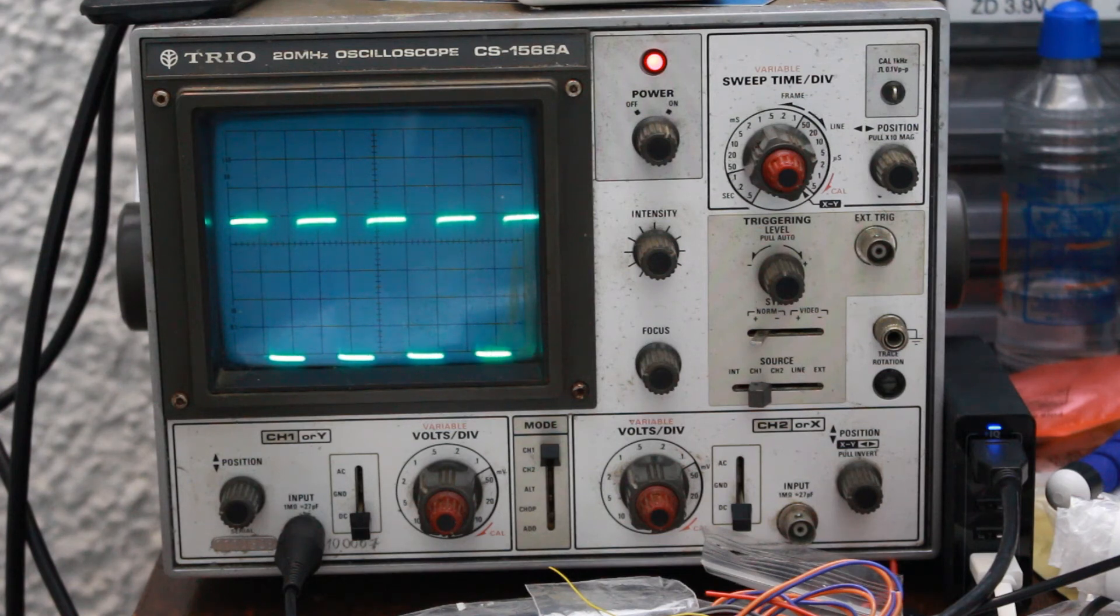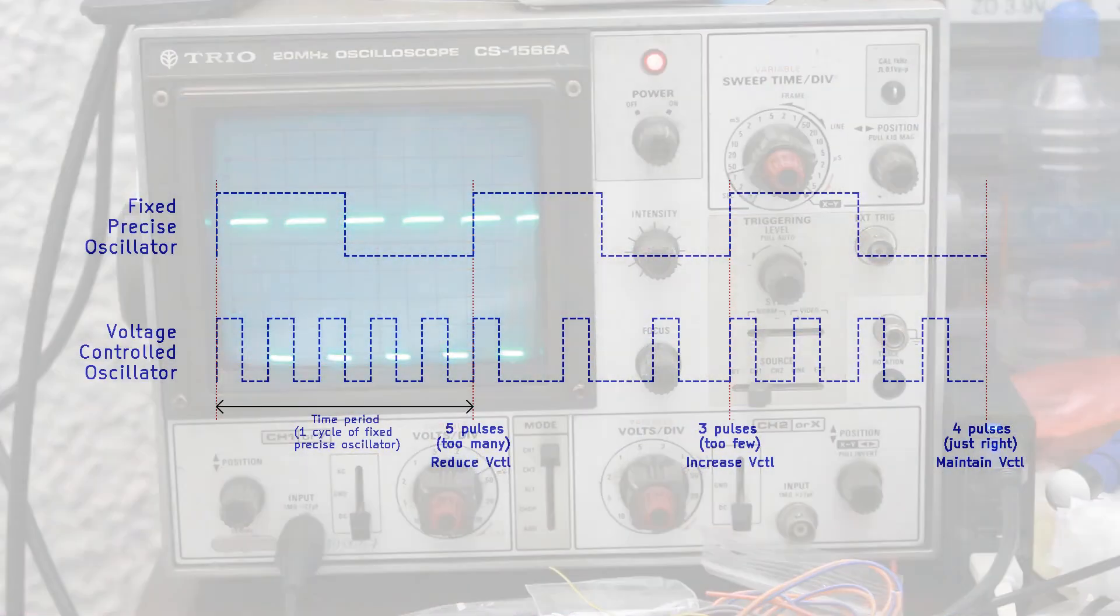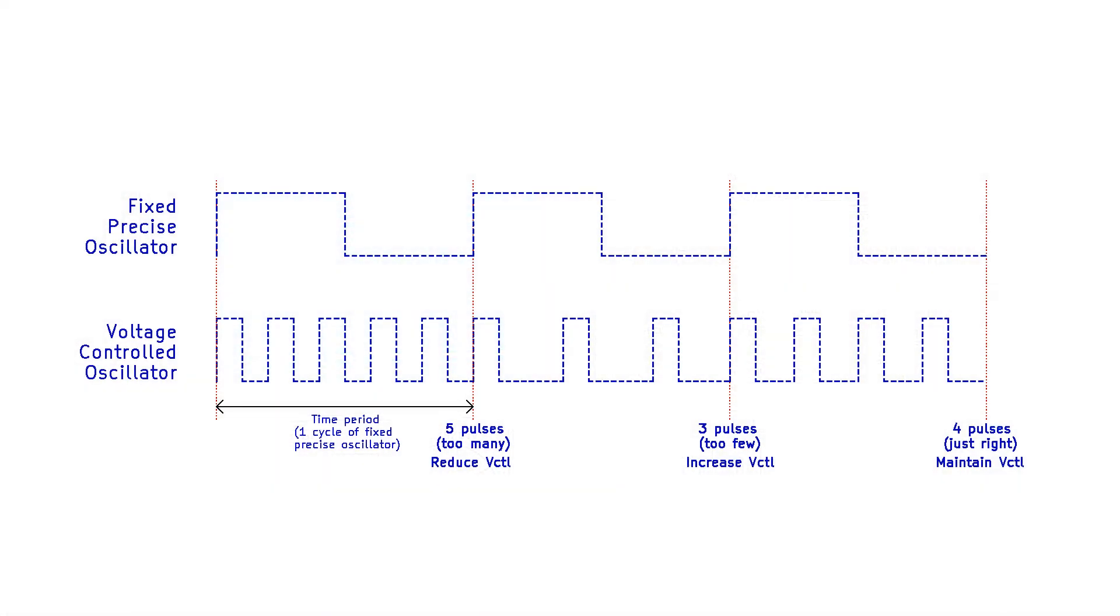I'm going to use this to illustrate how our phase-lock loop is going to work. The idea with the phase-lock loop is that you count the number of pulses a fast variable oscillator achieves in a period of time, measured using a reliable, fixed, possibly slower oscillator, and depending on the result, cause the variable oscillator to run faster or slower.